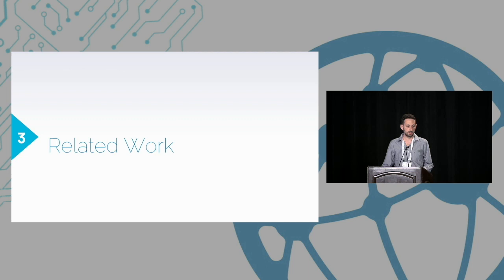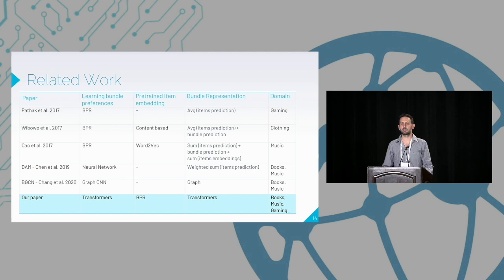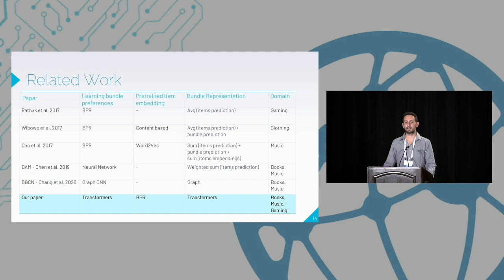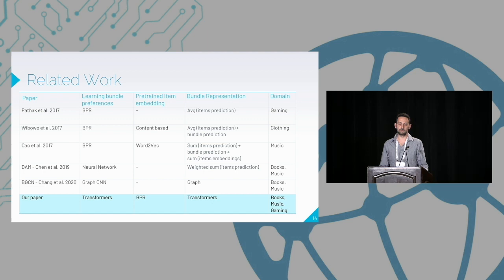As for related work, some works tried a collaborative filtering approach, and others used neural networks to solve the bundle-ranking problem — either by applying a weighted average on top of items, or treating the bundle as a whole unit and integrating user information. But none of them used a transformer to do so.